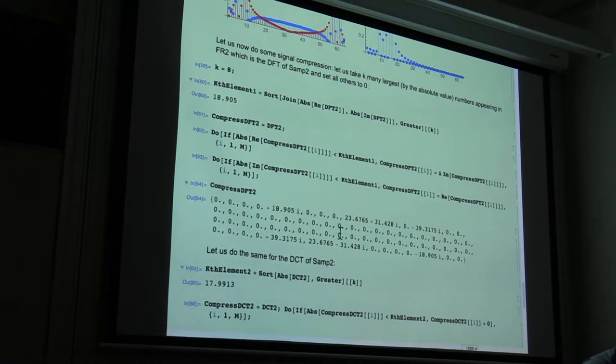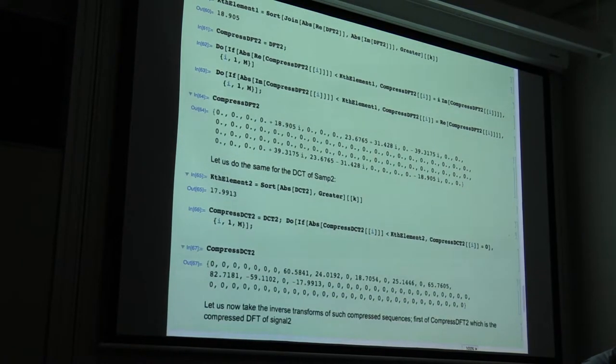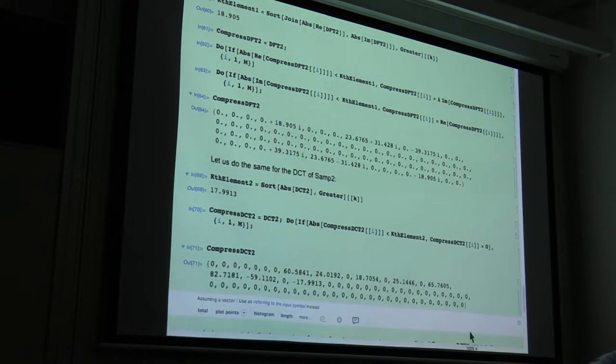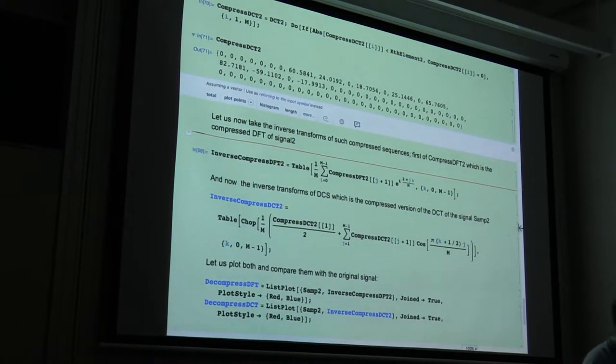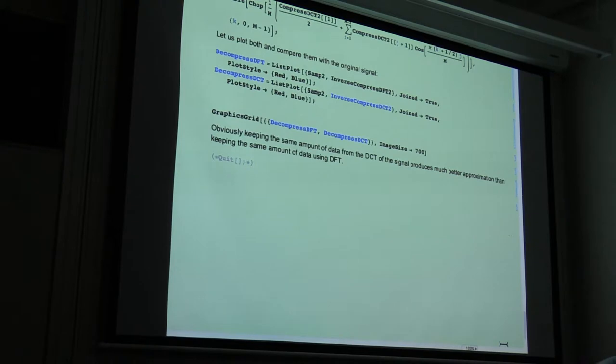And this is what you get for DFT, and you do the very same for DCT, right? And you get two compressed. And now let's use inverse formula of the compressed version. And the inverse formula gives you the following plots.